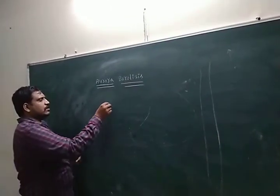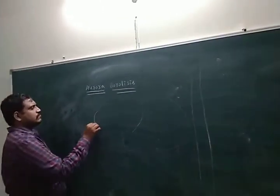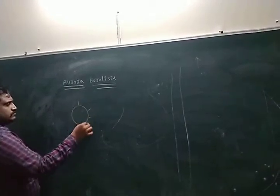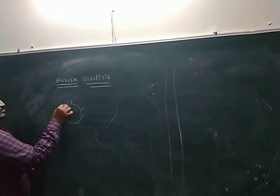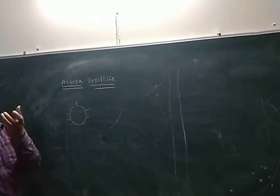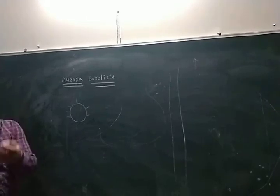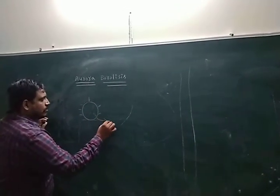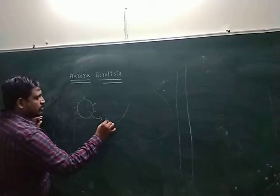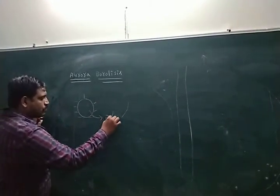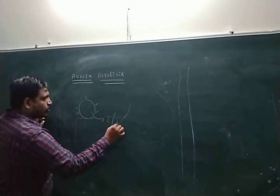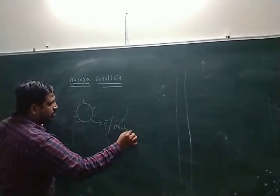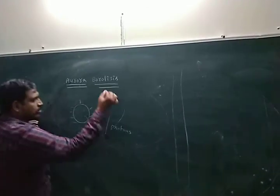This is the sun. What is the use of the sun? To emit light. But it also emits electrons, protons, and some charged particles as well.